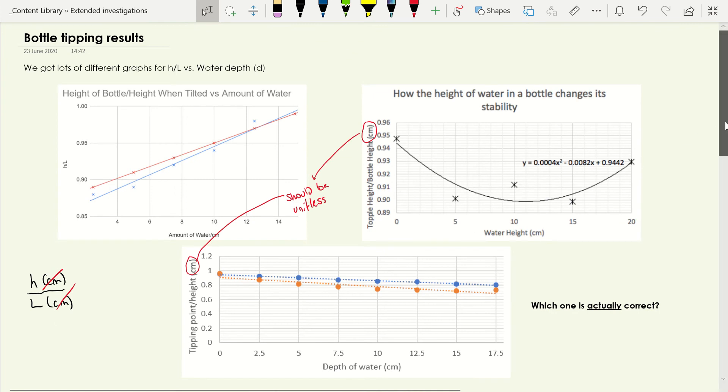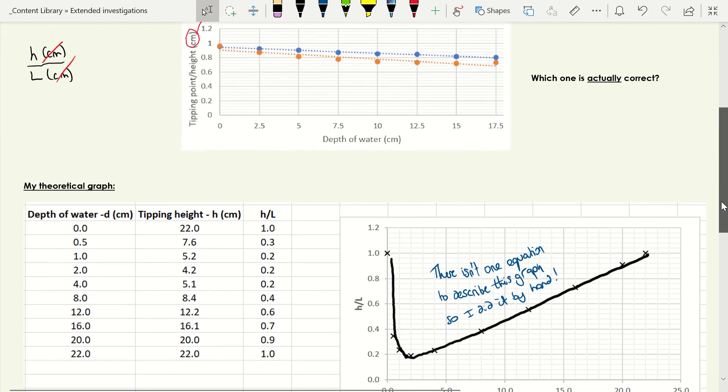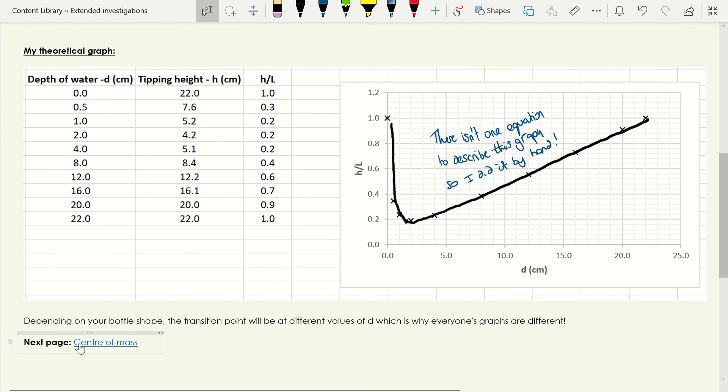Depending on the type of bottle you were using, depending on your bottle shape, this point here will move around. For some of you this point would have been very far to the left, which is why you got just this one. Some of you this point would have been quite far to the right, which is why you got just one going down, and some of you have got some data either side of that. Essentially all of those graphs were actually correct.